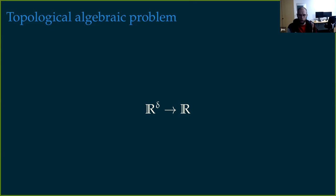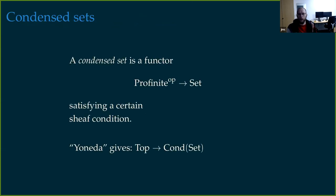About four years ago, Dustin Clausen realized that a solution might come from tools Schulze developed with Bhargav Bhatt for the pro-étale topology. Since then, he's been working with Schulze on condensed mathematics, and liquid mathematics is a part of condensed mathematics. A condensed set is a contravariant functor from profinite sets to the category of sets satisfying a certain sheaf condition.